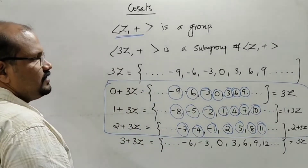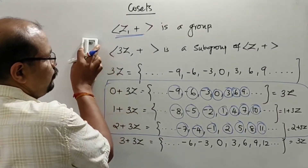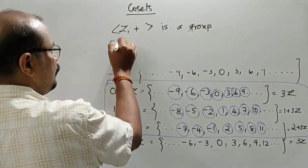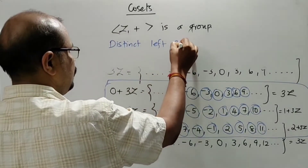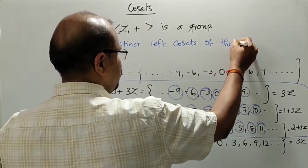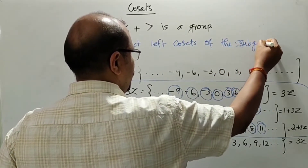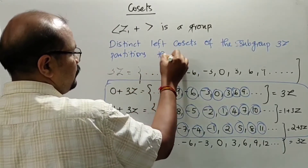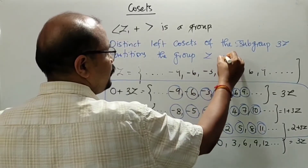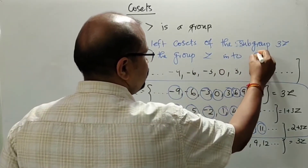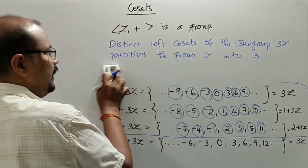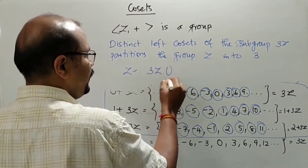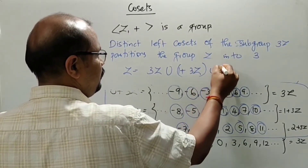These are the distinct left cosets, which partition Z. Z equals 3Z union (1+3Z) union (2+3Z). So the group Z is partitioned into these three distinct cosets of the subgroup 3Z.